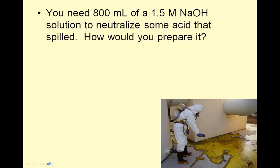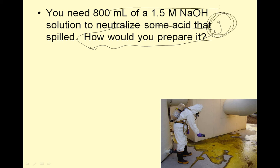You need 800 milliliters 1.5 molar NaOH solution to neutralize some acid that spilled. How would you prepare it? This is an extra special annoying thing. First we're going to solve and do the math. Change 800 milliliters right away to 0.8 liters. I see molarity. Molarity equals moles over liters. So I have 1.5 and I have 0.8 liters. I can solve for moles. Moles equal 1.5 times 0.8, and I get 1.2 moles.